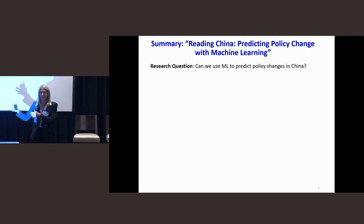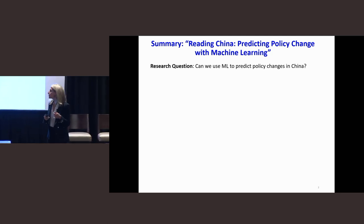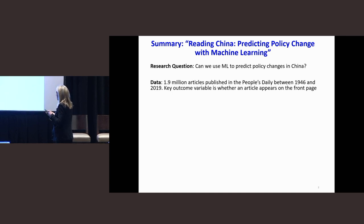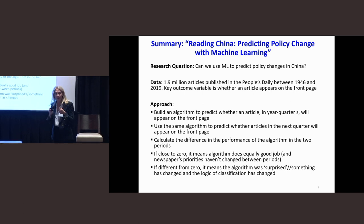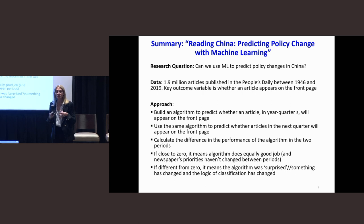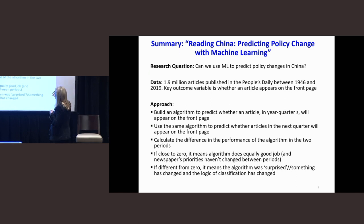Let's take every article that appears and predict whether the article goes on the front page. So we're not predicting the content of the front page — we're taking the content and predicting the page. What they do is essentially build this algorithm that can predict for every article in a quarter whether it should appear on the front page. Then they deploy this algorithm for articles in the ending quarter of the five years they built it for, and then use that same algorithm to look at articles in the next quarter.